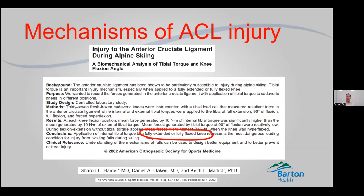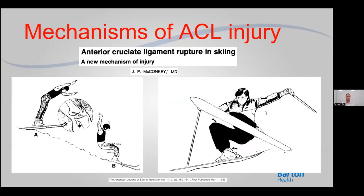This is a schematic from the 1980s. It shows the principle: over here with the knee hyperextended, with the guy in the air coming down in the back seat when he lands. And the drawing on the right shows that the downhill ski that he's falling back on is twisting on him, rotating the knee and putting that ACL under stretch and risk of injury.